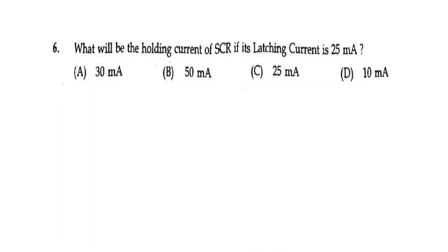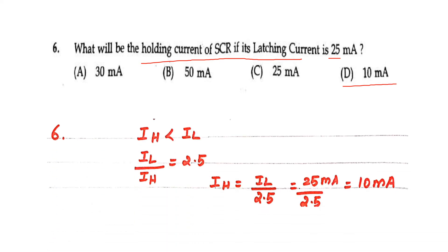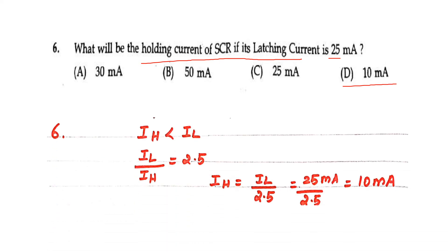What will be the holding current of an SCR if the latching current is 25 mA? Normally, the holding current is always less than the latching current. The ratio IL/IH equals 2.5, so IH = IL / 2.5 = 25 / 2.5 = 10 mA. That is the answer.